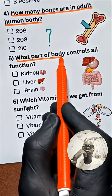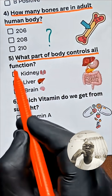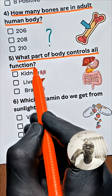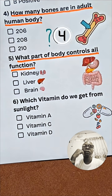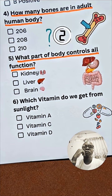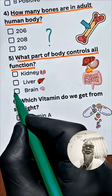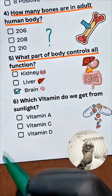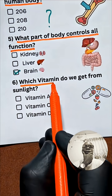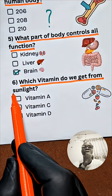Question number 5: What part of the human body controls all functions? Answer C: The brain.